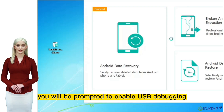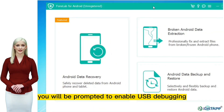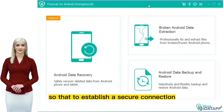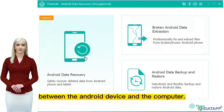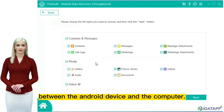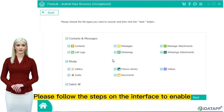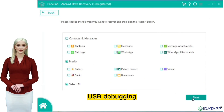Then we need to connect our Android phone with a USB data cable after starting the software. You will be prompted to enable USB debugging so that to establish a secure connection between the Android device and the computer. Please follow the steps on the interface to enable USB debugging.